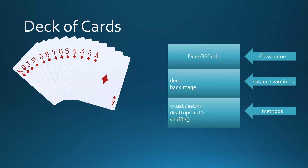For methods we have our typical get and set methods, but we also have to have the ability to deal. If you have a deck of cards you should be able to deal the top card off the deck and you should be able to shuffle the deck. There are many other methods we might think about like cutting the deck or getting a random card, but for now we're just going to deal the top card and shuffle it.